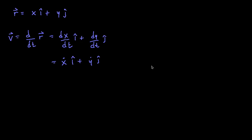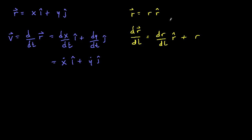So what if we want to do that in polar coordinates? In polar coordinates, we have r equal to r in the r-hat direction. So we want to compute dr/dt. We have to apply the product rule. The product rule gives us dr/dt in the r-hat direction plus r — where this r is just the magnitude of r and r-hat is the unit vector in the r-direction — times dr-hat/dt.